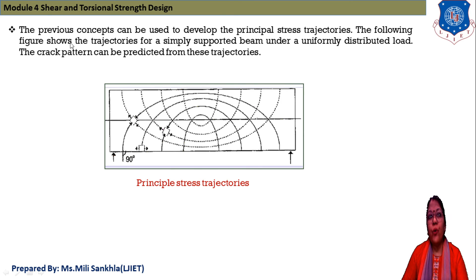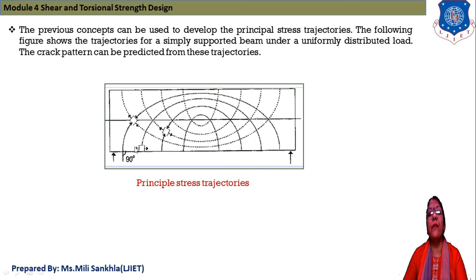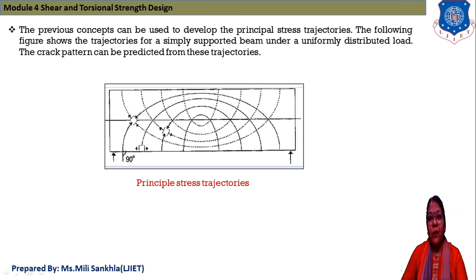The concept of principal stress trajectories can be used to develop crack patterns. The following figure shows the trajectories for a simply supported beam under uniformly distributed load. At the neutral axis the angle is 90 degrees, meaning shear stress is maximum and normal stress is zero. The trajectories are formed with respect to the neutral axis, and from these we can discuss the failure criteria of a simply supported beam under UDL loading. We stop here and in the next session will discuss another topic.